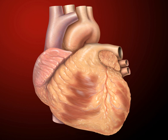In humans, other mammals, and birds, the heart is divided into four chambers: upper left and right atria and lower left and right ventricles. Commonly the right atrium and ventricle are referred to together as the right heart, and their left counterparts as the left heart.